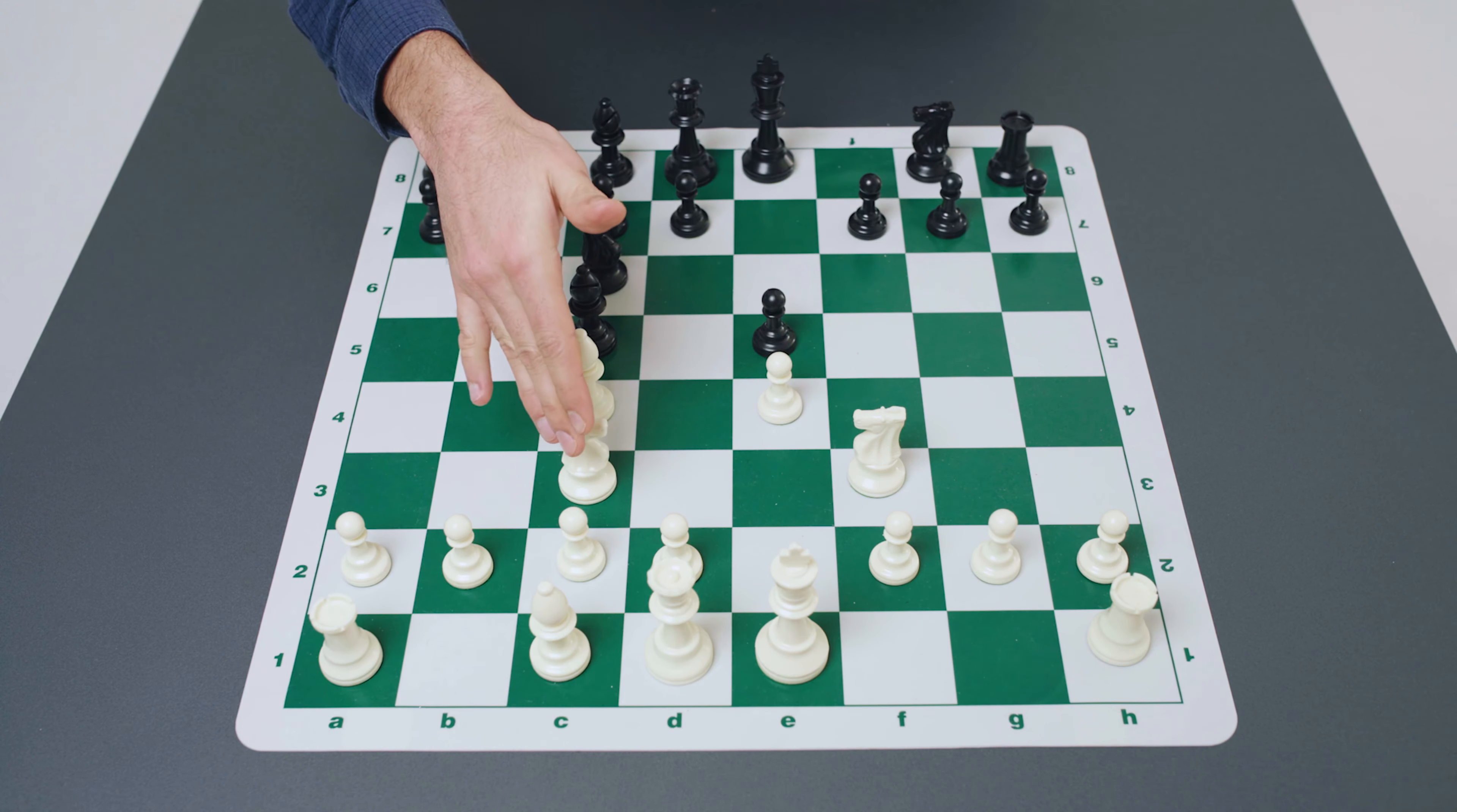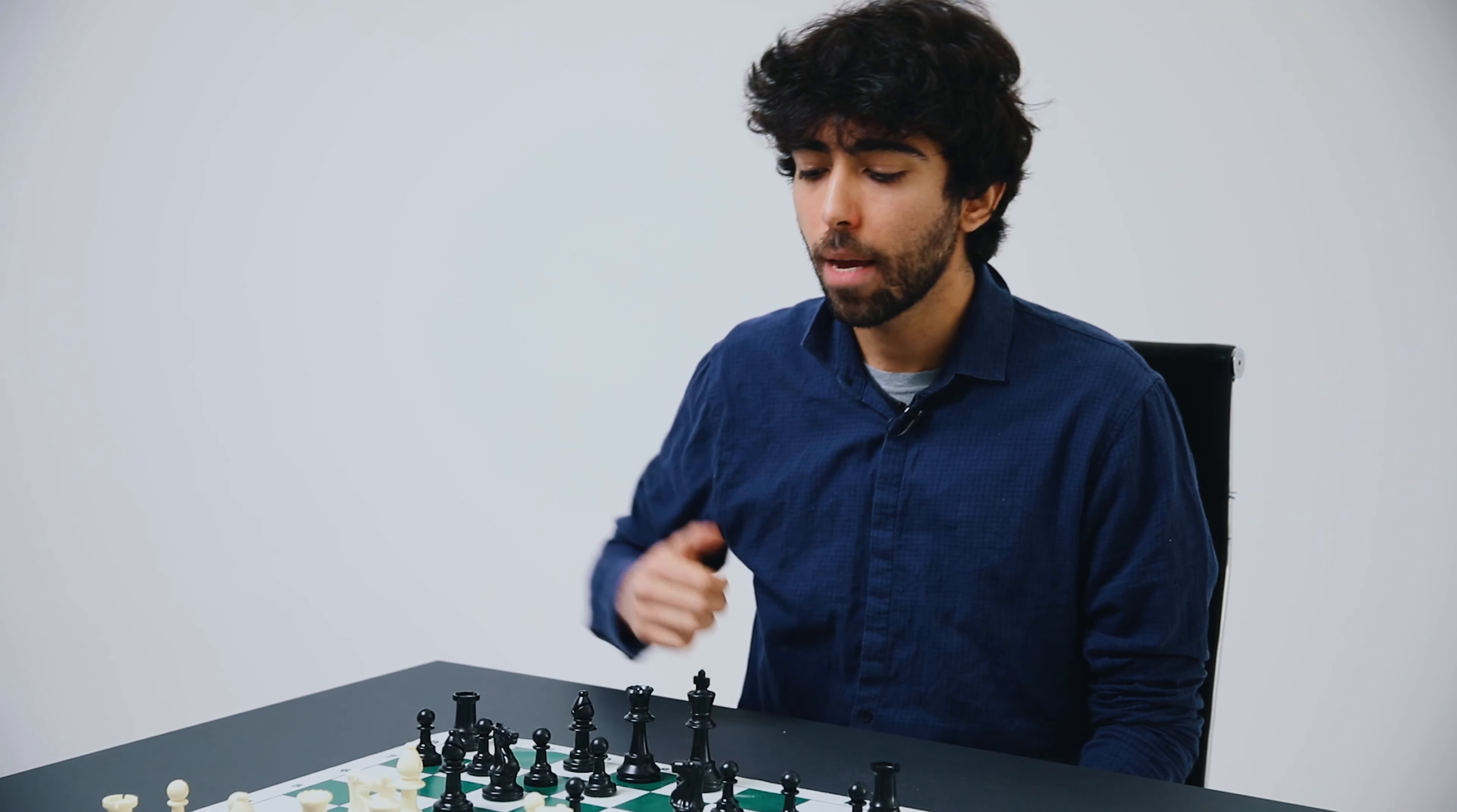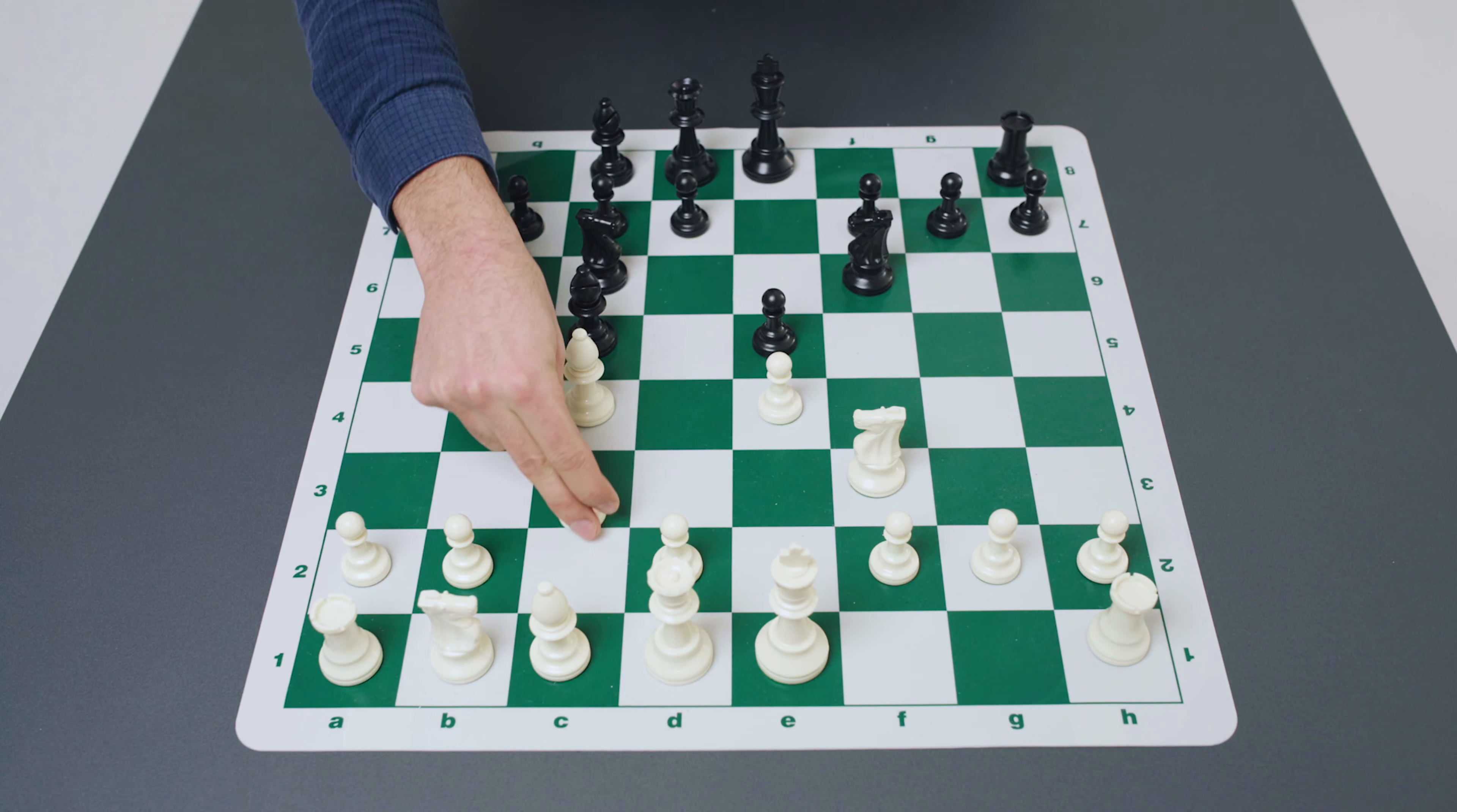Now black actually does not have to take the pawn so we will also examine the move bishop to b6. Therefore we have two variations. If the pawn is captured it should be captured by the bishop, that's the best move for black. This is the so-called Evans Gambit accepted and bishop to b6 is unsurprisingly the Evans Gambit declined.